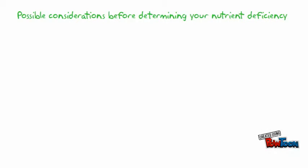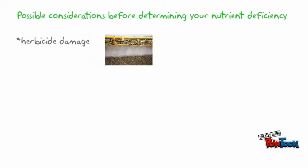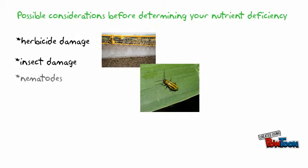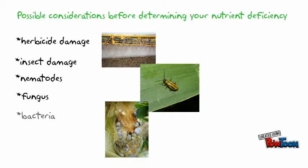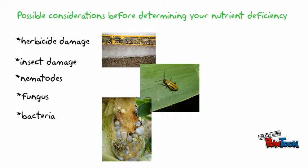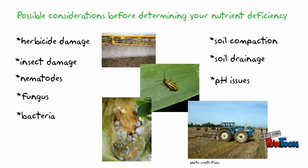First, rule out any possible damage from herbicide, insects, nematodes, fungus, or bacteria. Also consider soil compaction, drainage, and pH issues. These can always result in nutrient deficiency symptoms and don't necessarily mean the soil is lacking the correct nutrient; however, they could prevent plant roots from coming in contact with these nutrients.